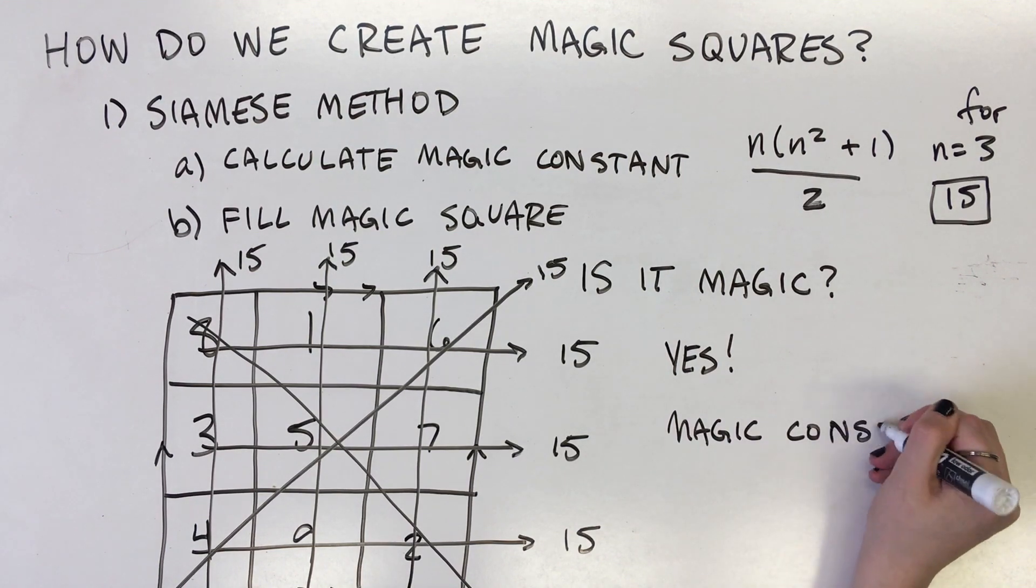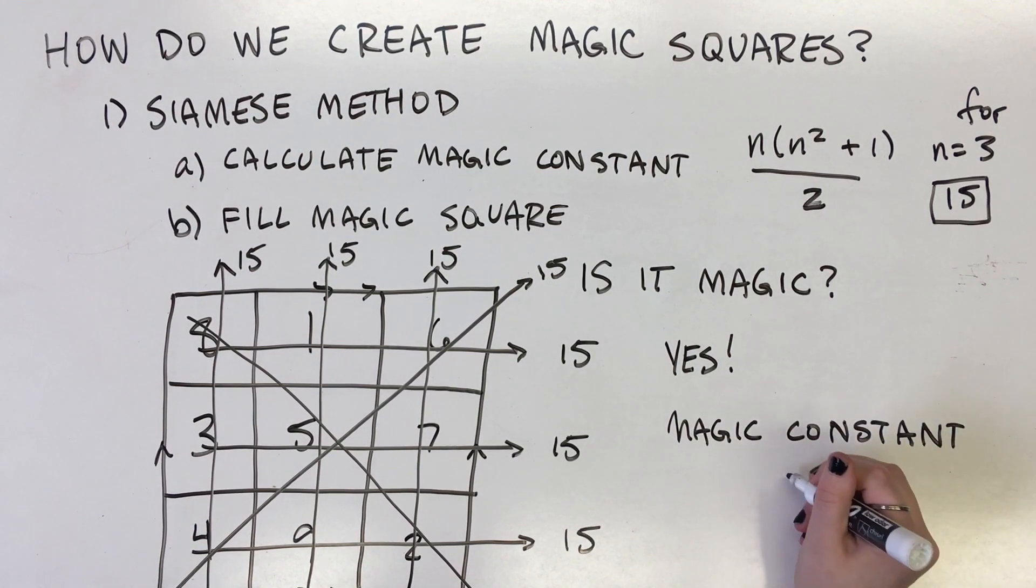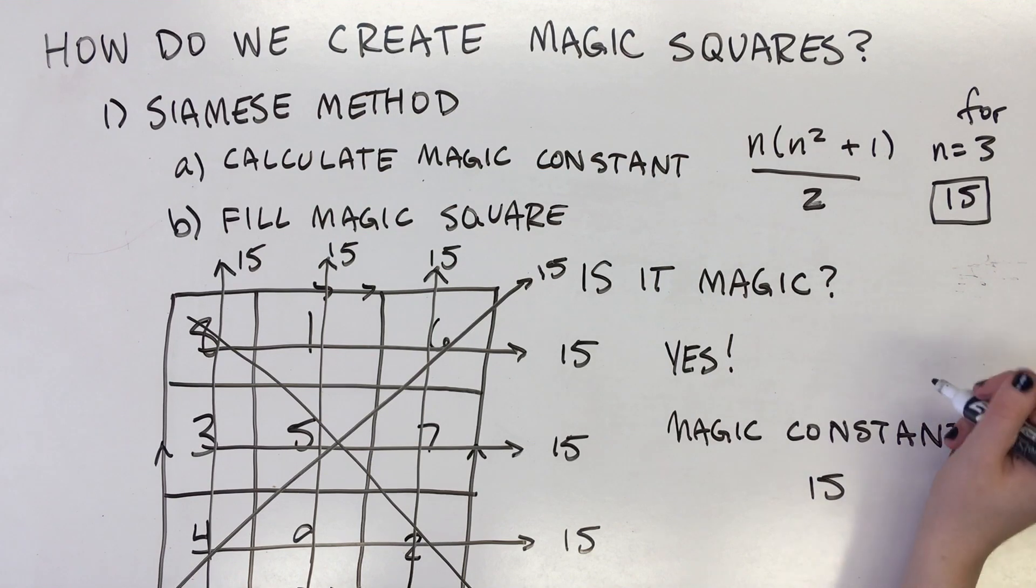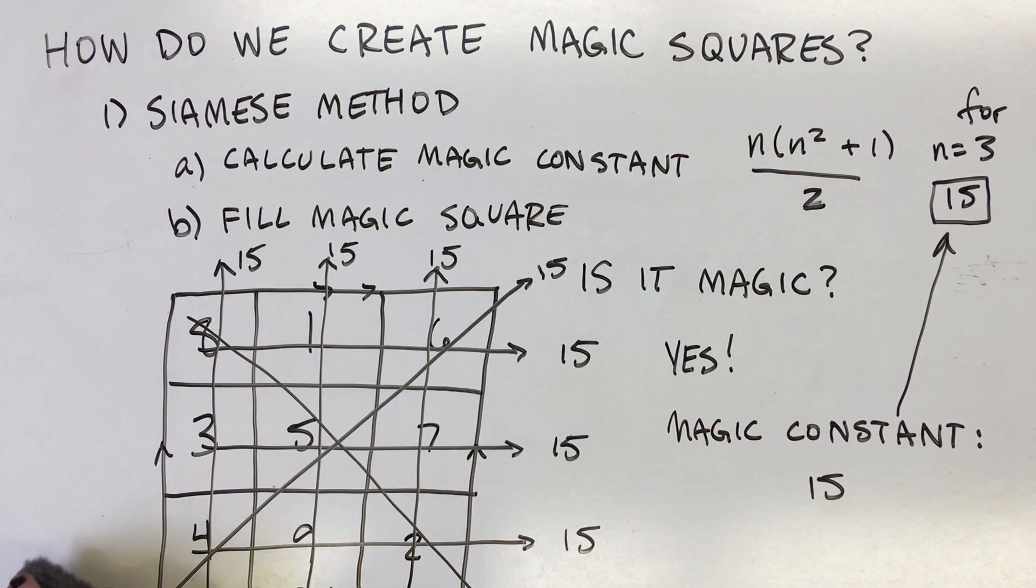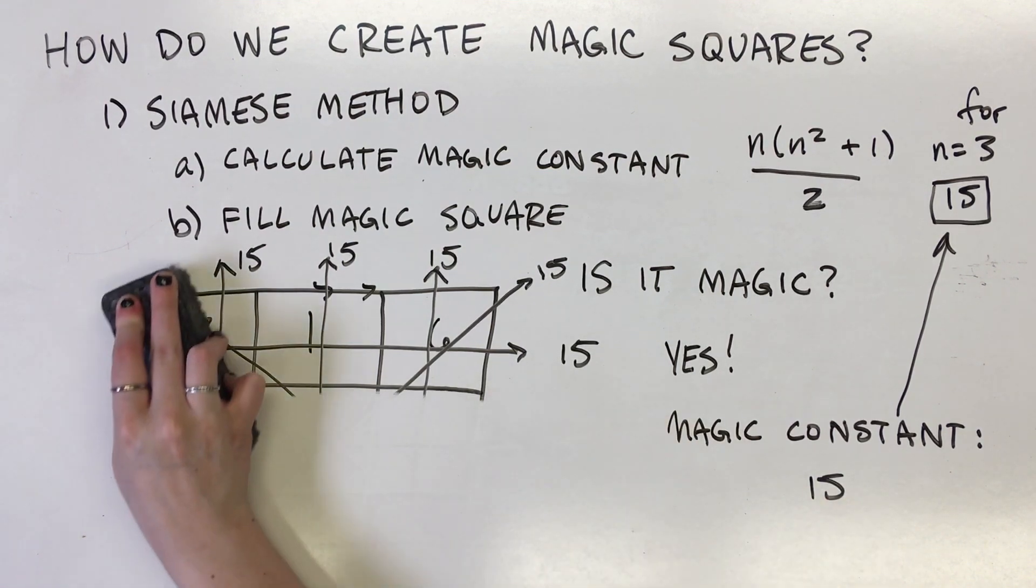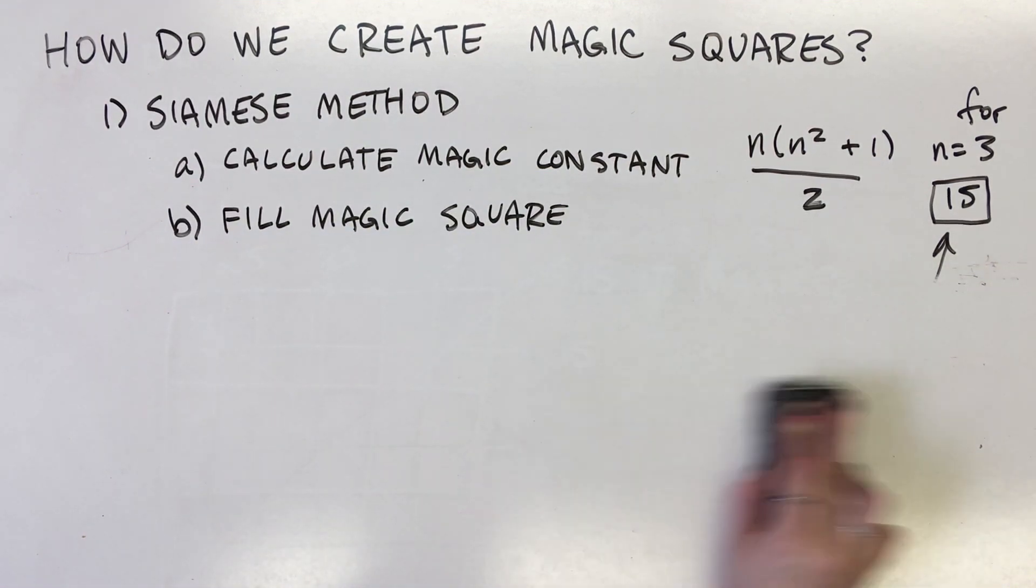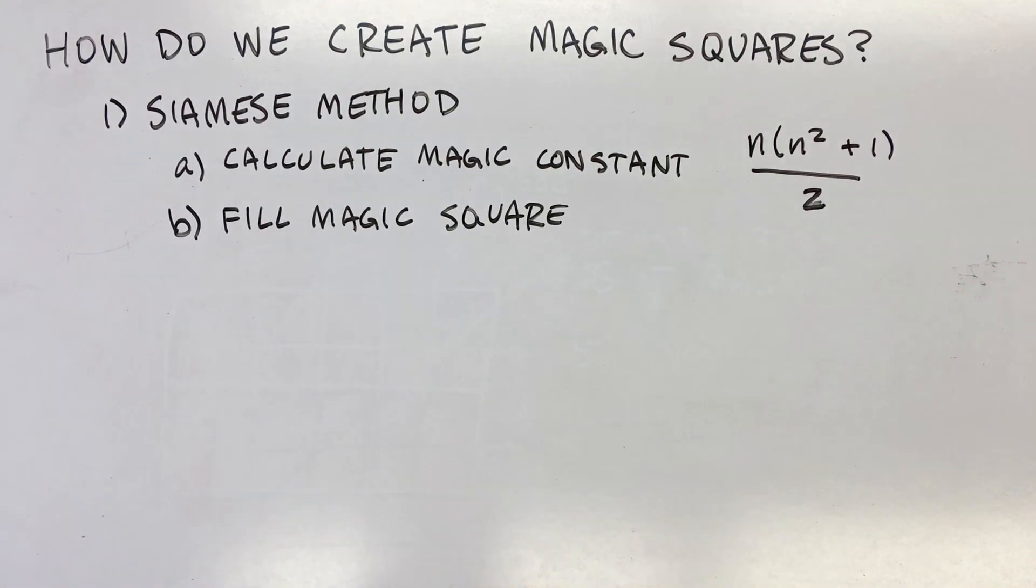In addition, distributing the number up and to the right also ensures that the diagonals sum to the magic constant. For magic squares of even degree, we use the Lux method. It follows a similar pattern as the Siamese method, and you can learn more about it in the link in the description.